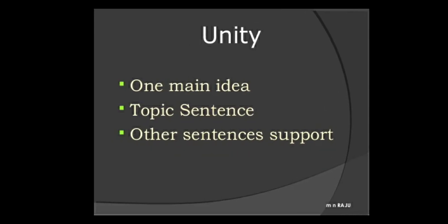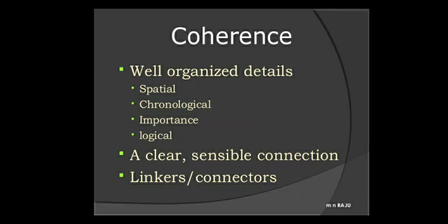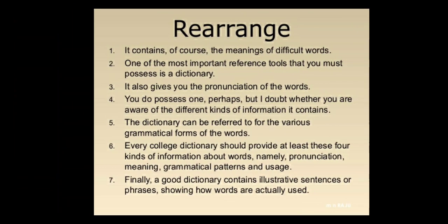Unity means one main idea — that is the topic sentence — and all other sentences also relate to it. For coherence, the paragraph should be well-organized: details arranged spatially, chronologically, by importance, or logically. There should be a clear, sensible connection, and linkers and connectors must be arranged properly.